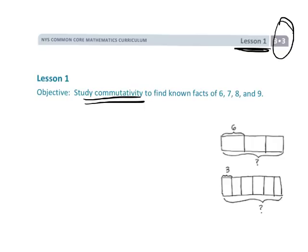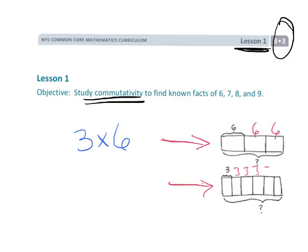The idea is this model right here is saying three groups of six, because you have six, then another six, then another six. So we would represent that with three times six — three groups of six traditionally. Then there are other cultures that would represent this as six times three, but in the United States we model this as three times six. Similarly, here you have three, three, three, three, three, three — so you have six groups of three.